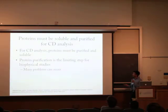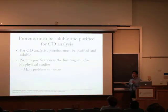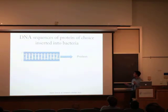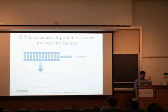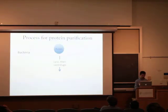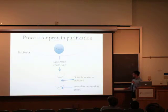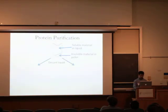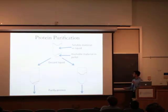For CD analysis, our proteins must be purified and soluble. Protein purification is often the limiting step of biophysical studies, and many problems may occur. The general process is that we take DNA coding for the protein of choice, and through a process called transcription, we insert that specific DNA into a bacterial cell and make it express the protein for us. We then break open the cell, centrifuge the sample, and end up with a soluble fraction and an insoluble pellet. We separate the two and hope to purify the protein, wanting most of it in the soluble fraction for CD analysis.